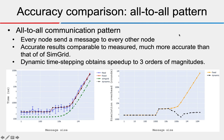For the all-to-all communication pattern, which is known to cause network contention, every node sends a message to every other node. We still obtain very accurate results compared to measured results, while SimGrid's results are much lower than the real time, so we have better accuracy. Dynamic time stepping here achieves up to three orders of magnitude speed-up compared to fixed time stepping, and the number of simulation time steps required with dynamic time stepping appears very stable with respect to message size.